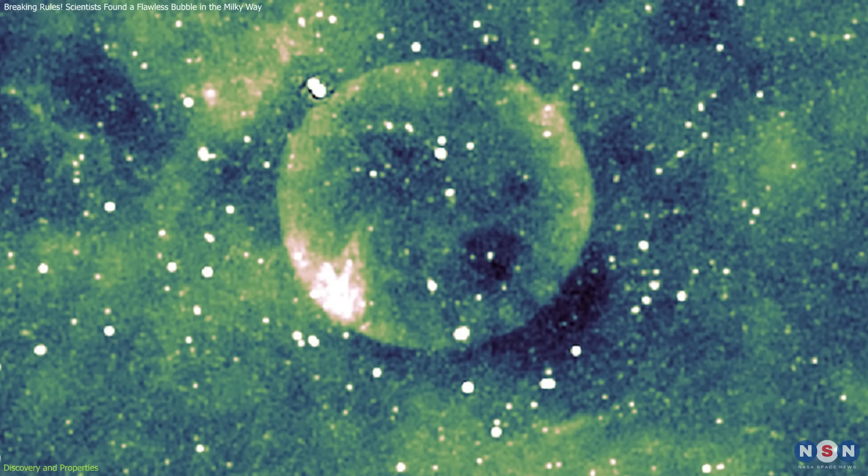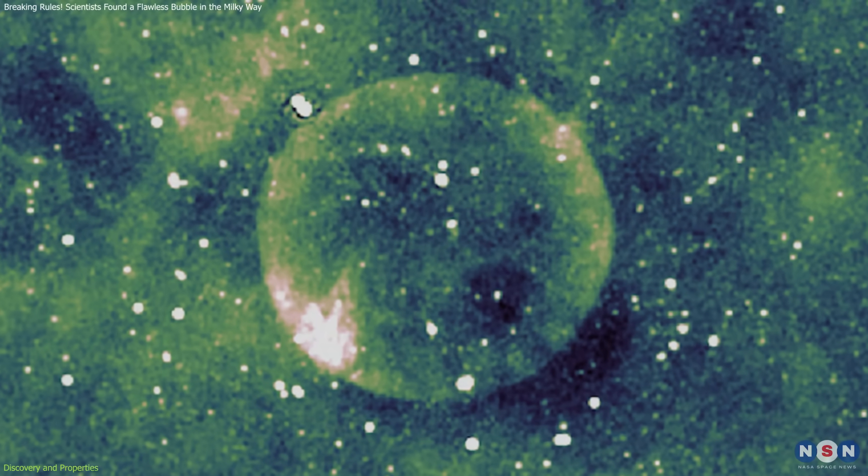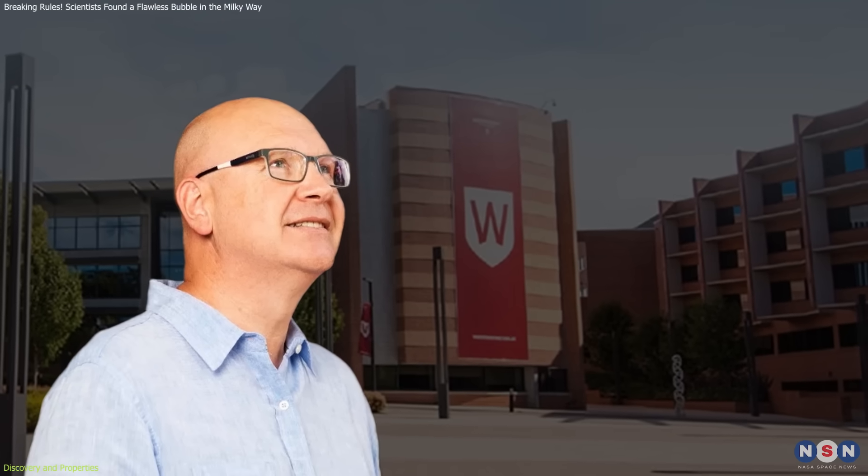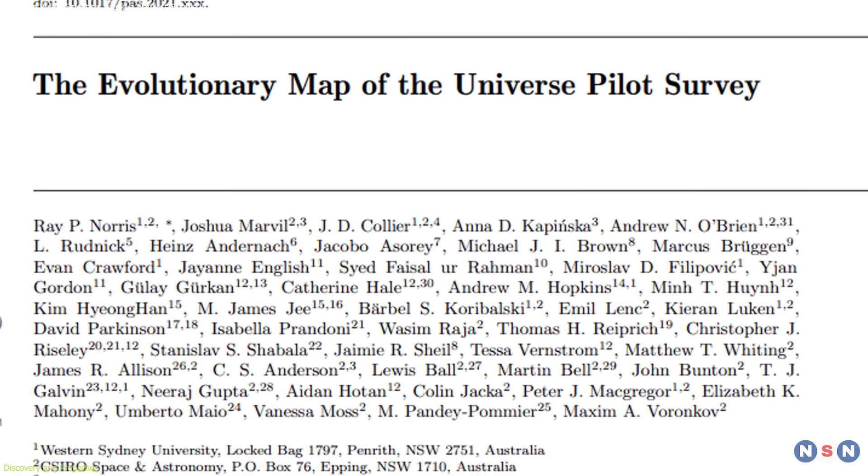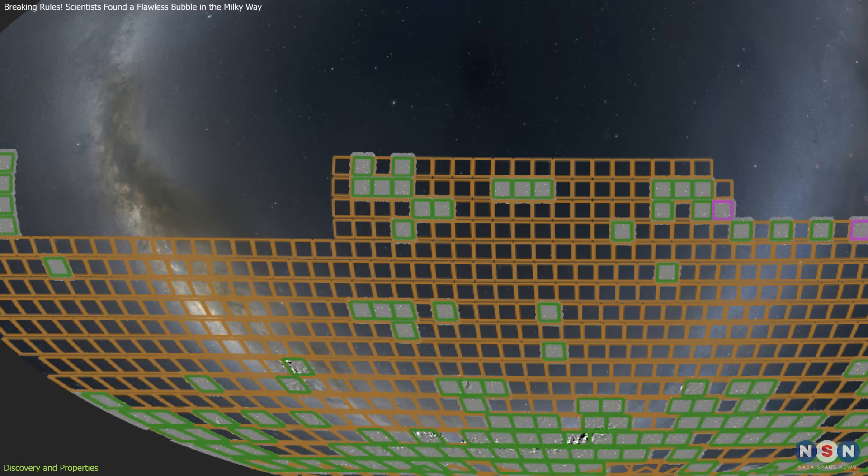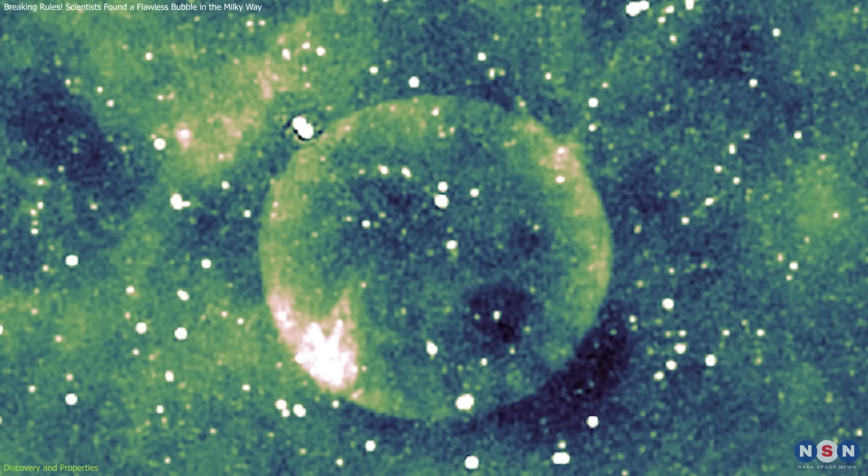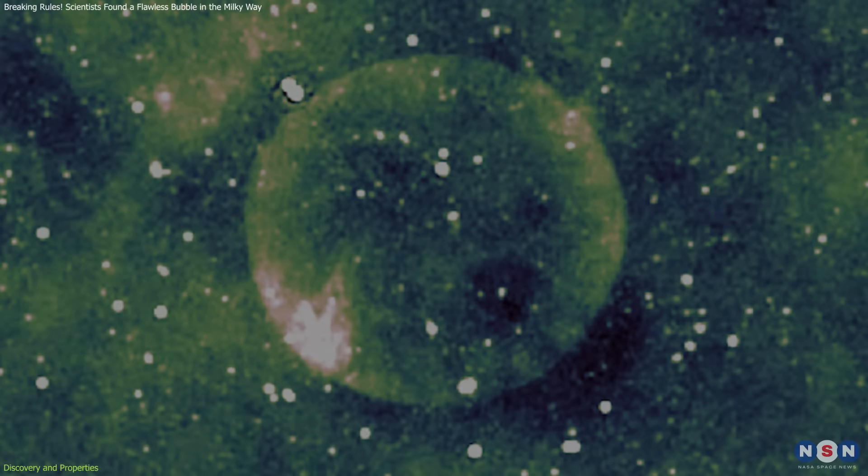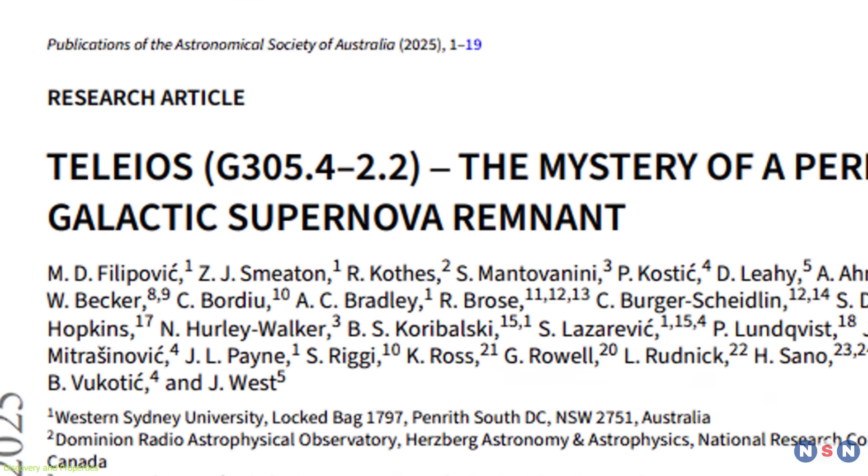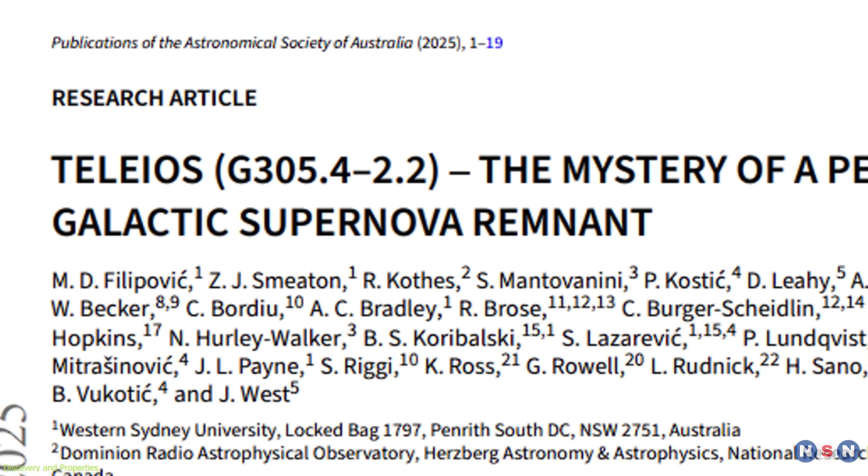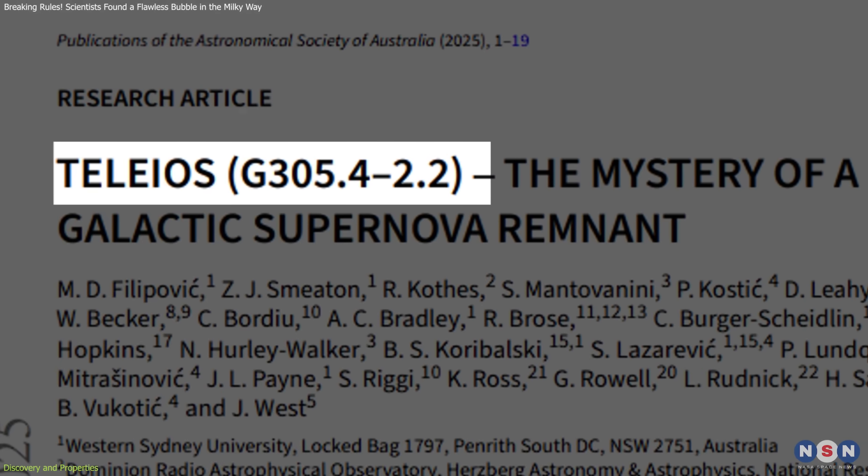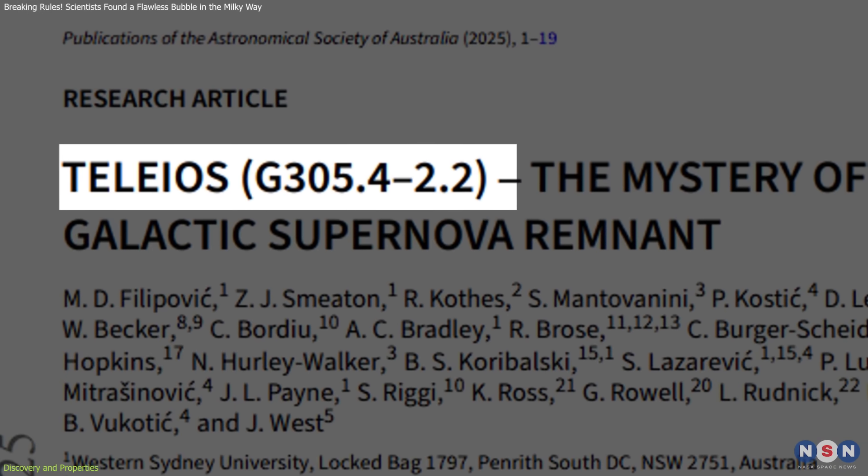Teleos was first noticed in May 2023 by astronomer Miroslav Filipovich of Western Sydney University. While reviewing data from the EMU survey, a wide-field project mapping radio emissions across the southern sky, he encountered a nearly flawless circular structure. It was immediately flagged for further study and officially cataloged as SNR G305.4-2.2.